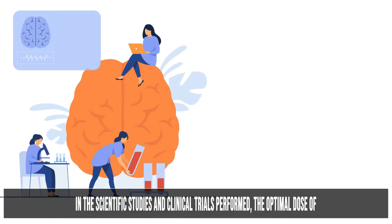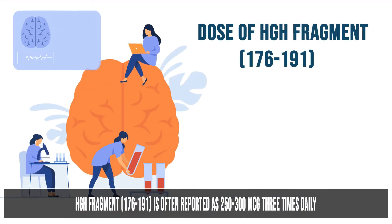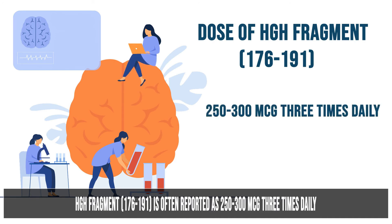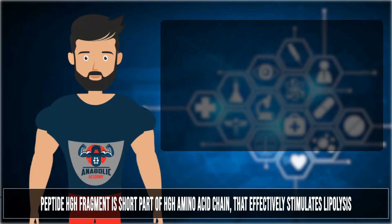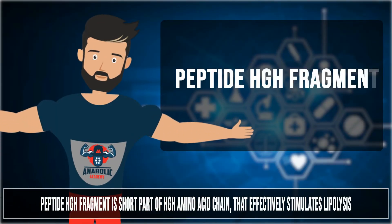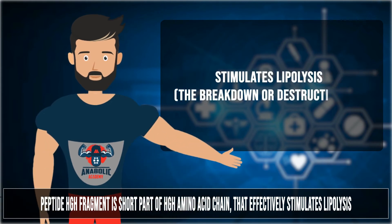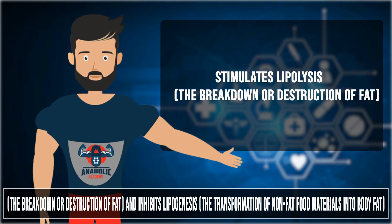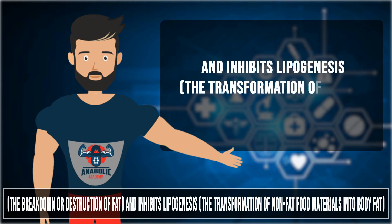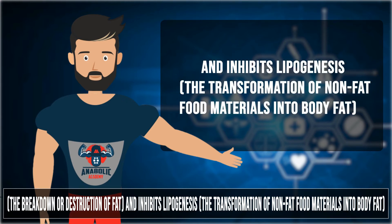In scientific studies and clinical trials performed, the optimal dose of HGH Fragment 176-191 is often reported as 250 to 300 micrograms three times daily. The peptide HGH fragment is the short part of the HGH amino acid chain that effectively stimulates lipolysis — the breakdown or destruction of fat — and inhibits lipogenesis, the transformation of non-fat food materials into body fat.